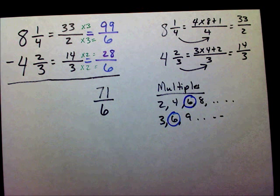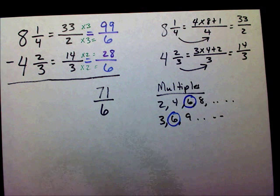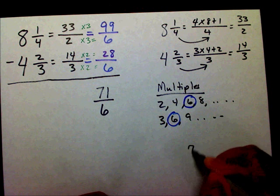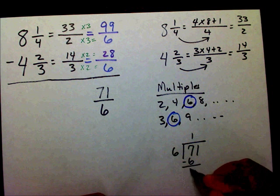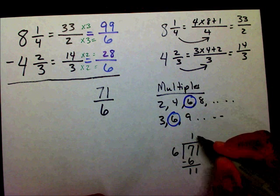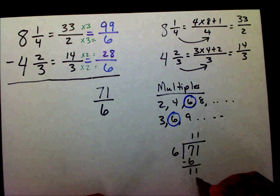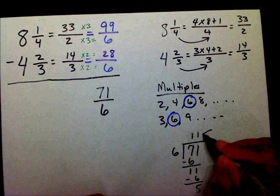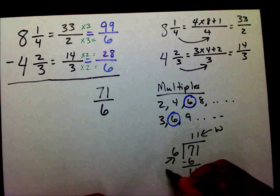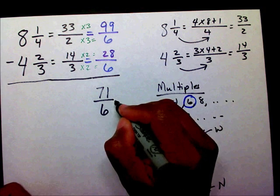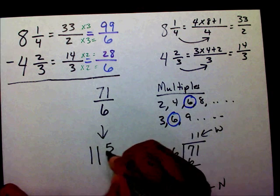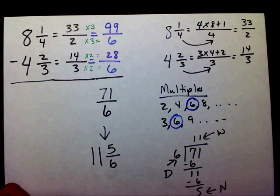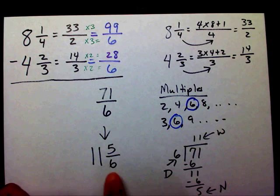Seventy-one over 6 — we need to divide to convert it. 6 goes into 71: 6 goes into 7 one time, subtract, bring down the 1. 6 goes into 11 one time — that's 5 remainder. So the whole number is 11, the numerator is 5, and the denominator is 6. So instead of writing 71 sixths, we write 11 and 5 sixths. This is my final answer.